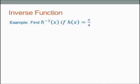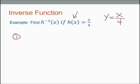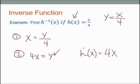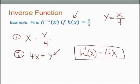Hi, it's me, Mr. B. Let's find the inverse of h of x if h of x equals x over 4. First step: switch x and y. I don't have a y, but h of x just means y, so y equals x over 4. Switch x and y: x equals y divided by 4. Second step: solve for y. All I have to do is one operation — I'm dividing y by 4, so I need to multiply both sides by 4. So I end up with 4x equals y. Writing it the right way: the inverse of h of x equals 4x.